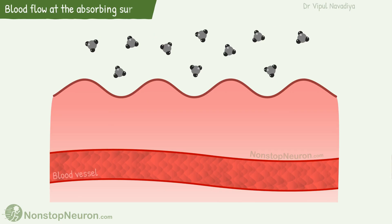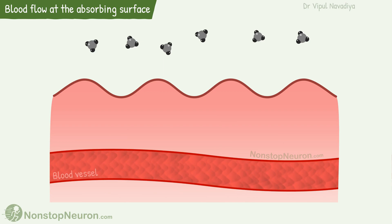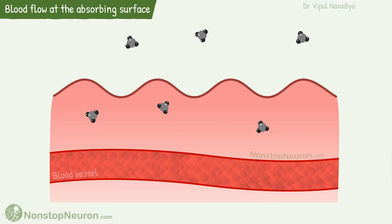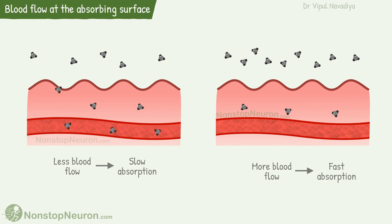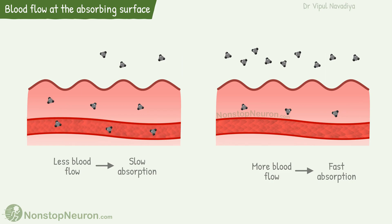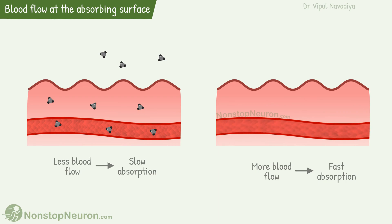Next, blood flow at the absorbing surface. As the drug is absorbed, the blood flowing through the local blood vessels removes it from the site of absorption, which maintains the concentration gradient for absorption of more drug. If blood flow is slow, the drug won't get cleared fast enough, so absorption of the remaining drug would be delayed. On the other hand, when blood flow is fast, the drug is cleared quickly, so the remaining drug enters faster — absorption would be faster. So basically, the more the blood flow, the faster the absorption.